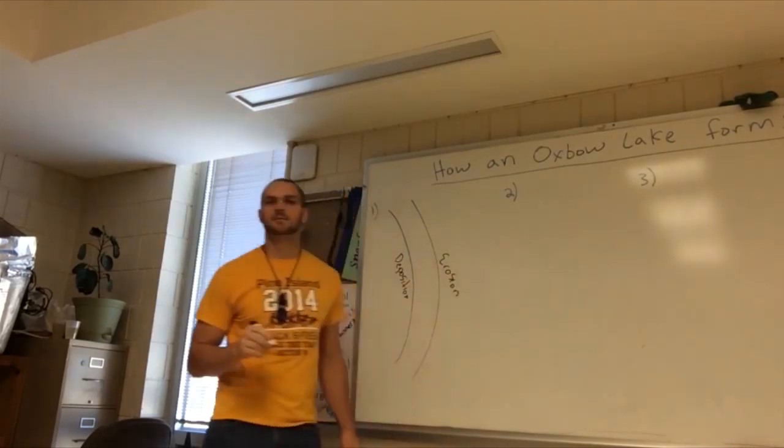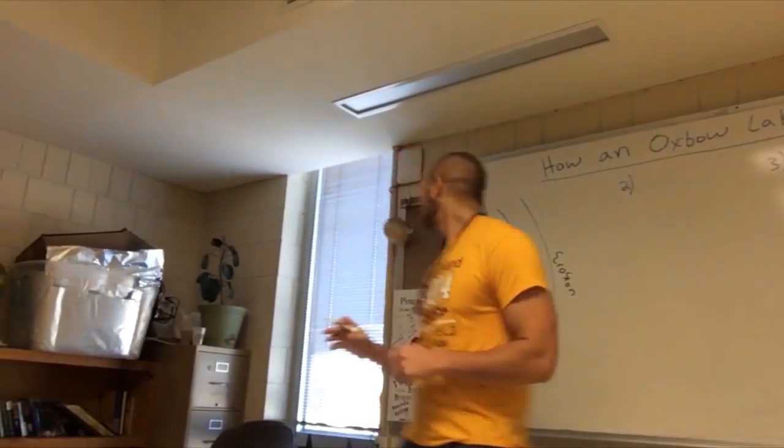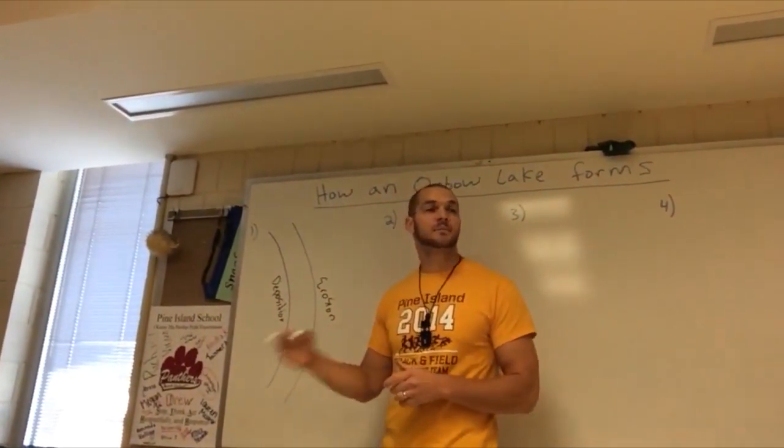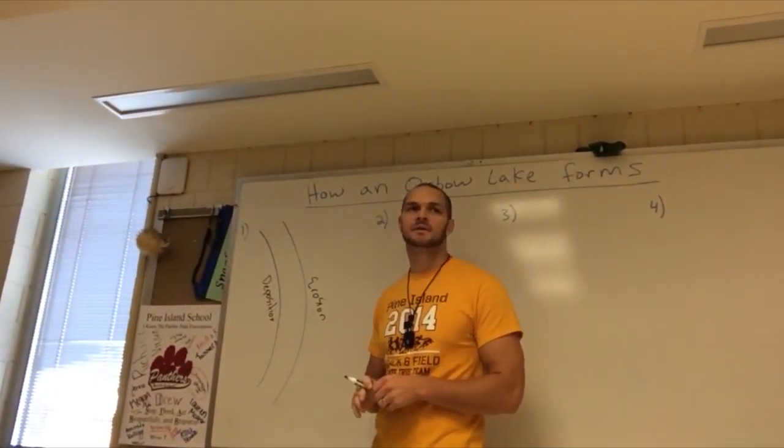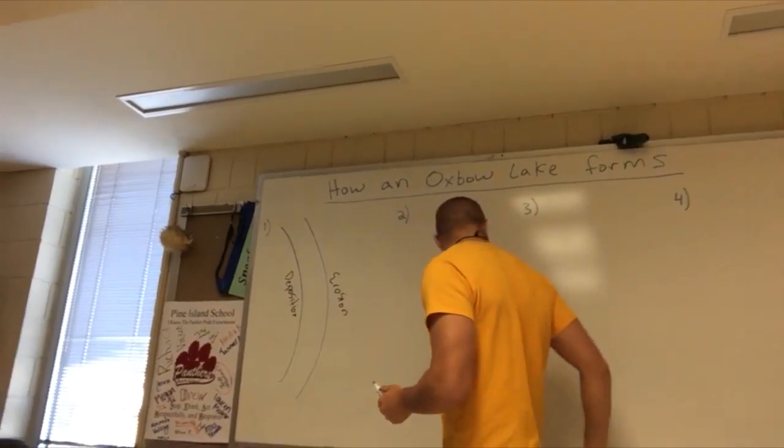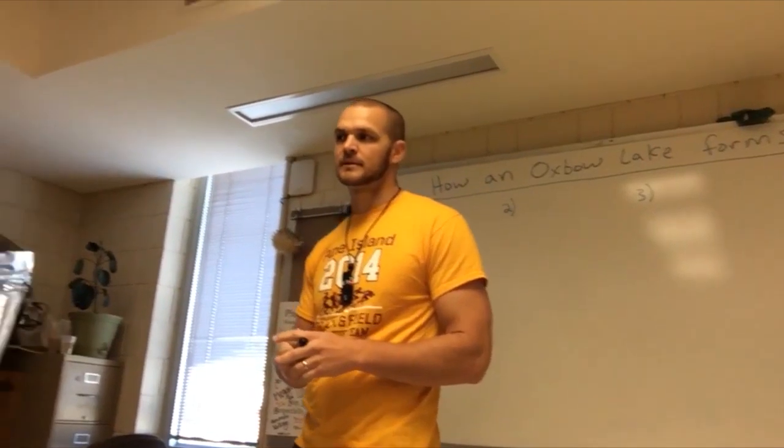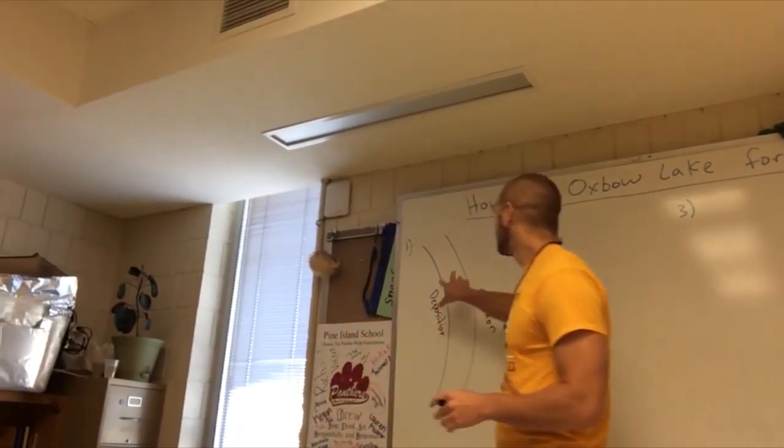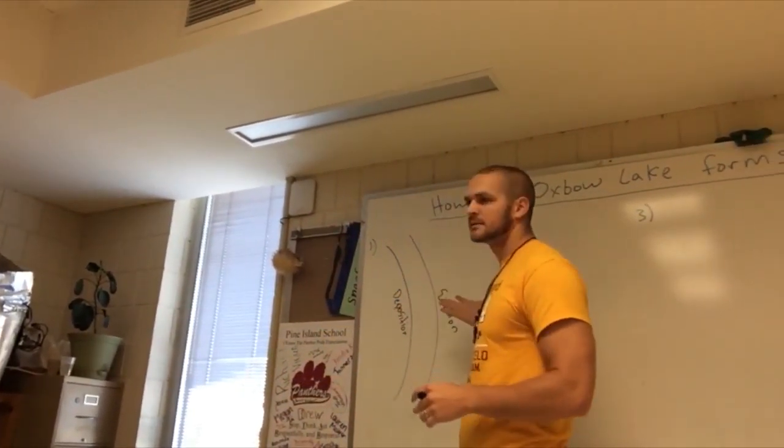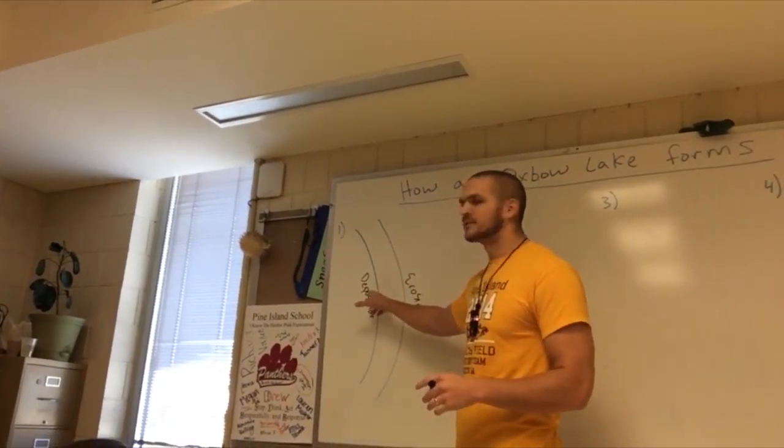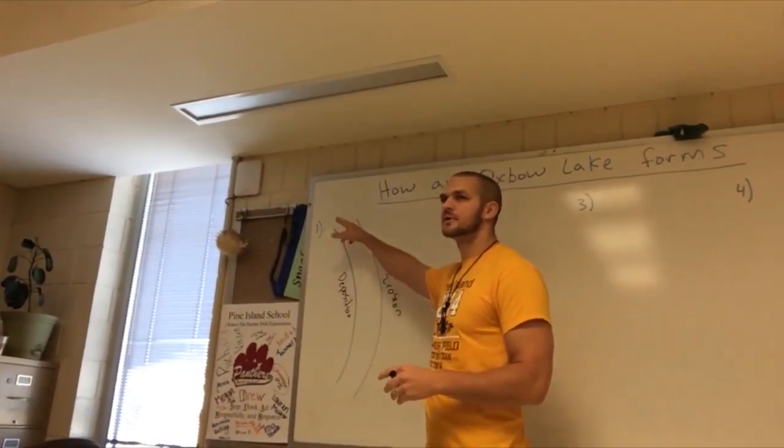Now, if this happens for a while, if deposition happens on one side and erosion happens on the other side, if that's happening for a while, what's going to happen to the shape of this river? Is it going to get wider? Yeah. This line is going to get out further, but what's going to happen because of the deposition too? It's going to build up.